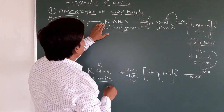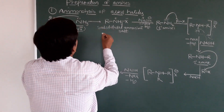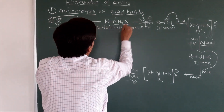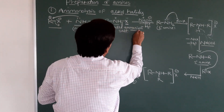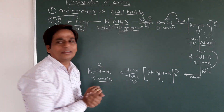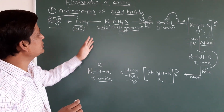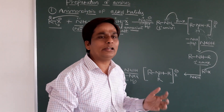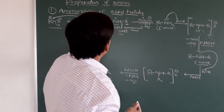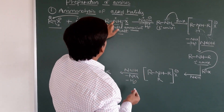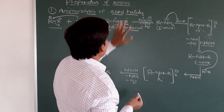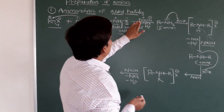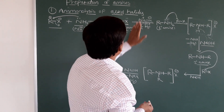We get a substituted ammonium salt: R–NH3⁺ X⁻. This substituted ammonium salt again reacts with the strong base NaOH.